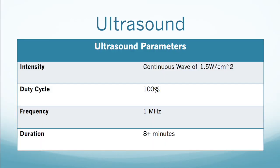A good intervention to start with is ultrasound. Here are the parameters for thermal ultrasound, as inducing heat to the radial tunnel and supinator will increase the extensibility of those tissues and help to release the radial nerve from its location of entrapment.